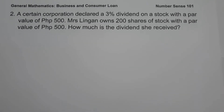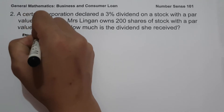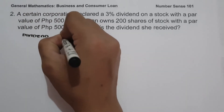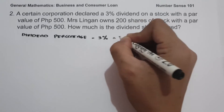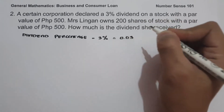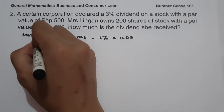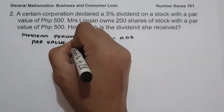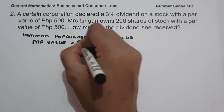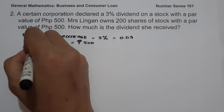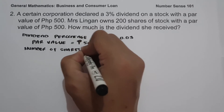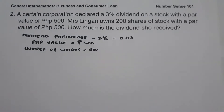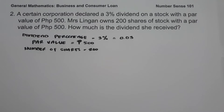To determine the amount of dividend she received, let us identify our given: the dividend percentage is 3 percent, or 0.03 in decimal form. The par value is 500 pesos. The number of shares she owned is 200.